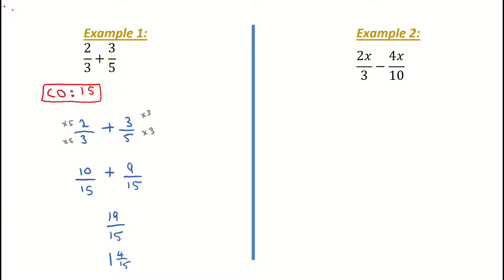We're now going to look at example 2, bringing in a little bit of algebra and changing our sign to a negative. So it's 2x over 3 minus 4x over 10. Same steps apply — we find our common denominator first. My common denominator here is going to be 3 multiplied by 10, which is 30.